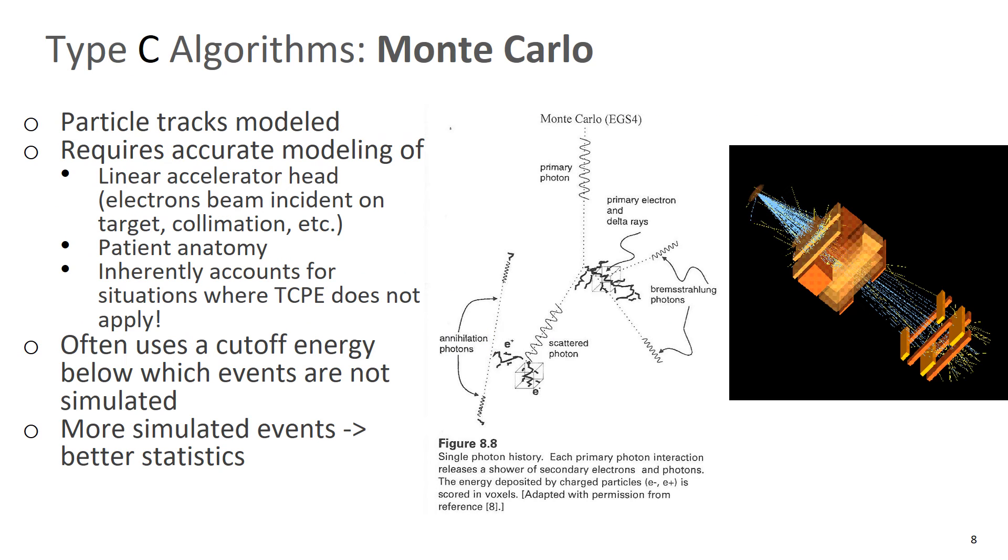So Monte Carlo simulation is known to be the gold standard for dose calculation. And this is basically when you have each particle track being modeled throughout the medium. So you have individual photons or electrons that come in and you're modeling all the events and you're adding up dose and there's multiple histories. And as you add more histories, you increase your statistics, you get better statistics for that dose.